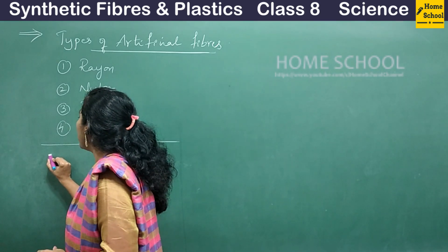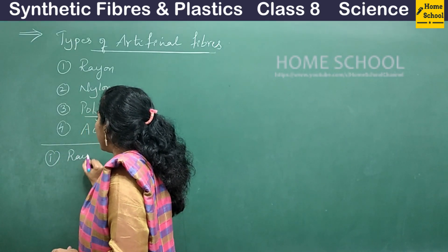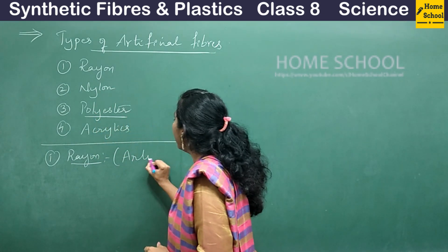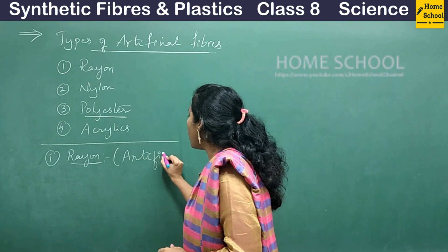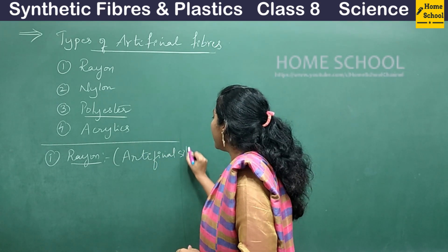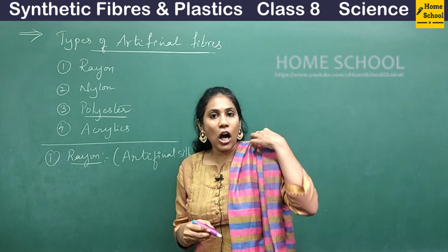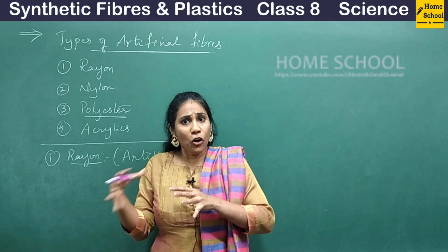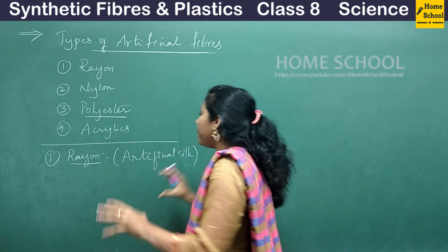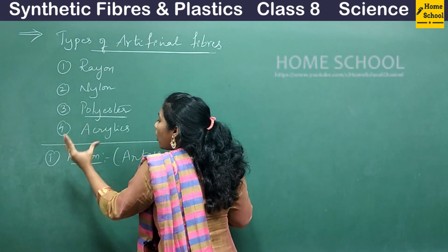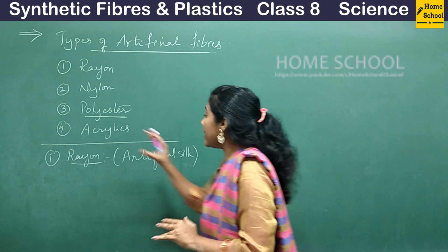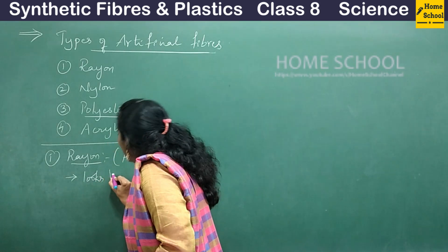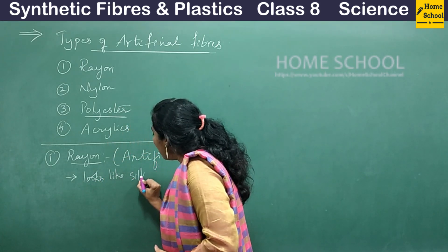Coming to the first variety — rayon. Rayon is famously called artificial silk. Most cloth varieties, carpets, and bed sheets are made up of a fiber called rayon. It looks like silk, which is why it is called artificial silk.